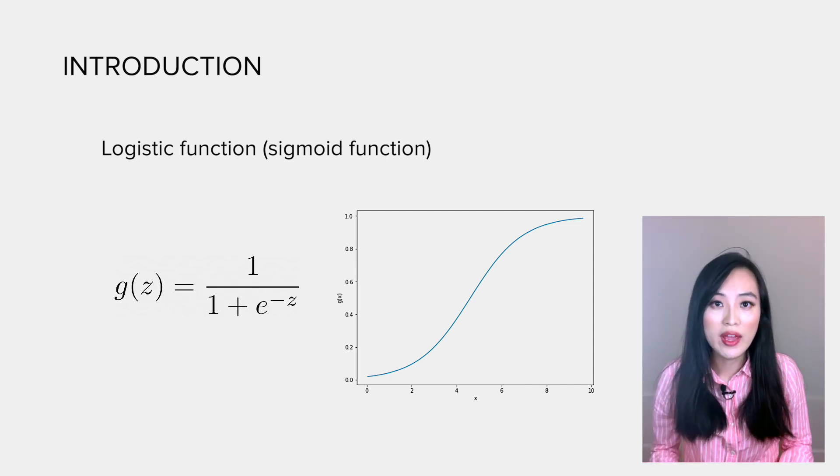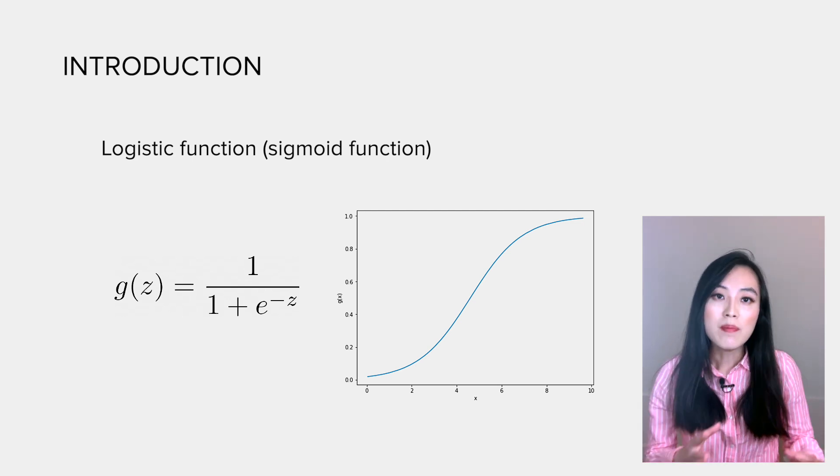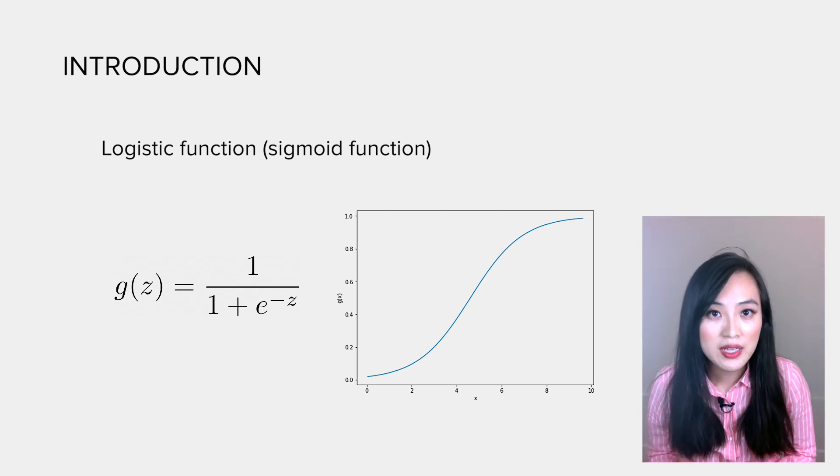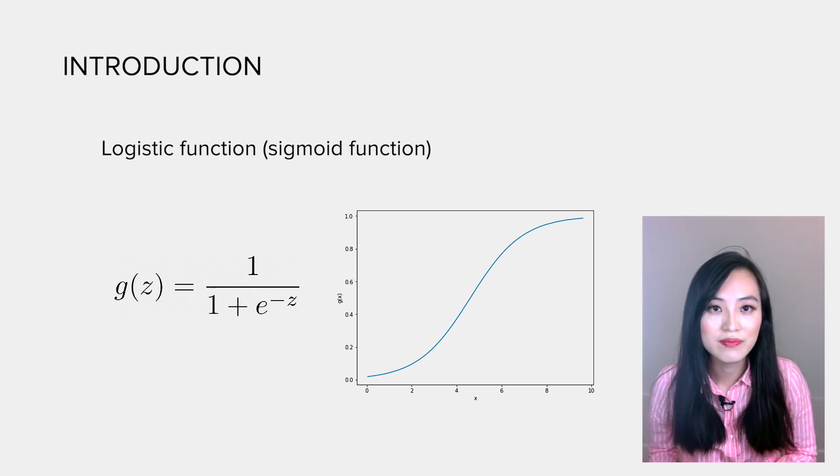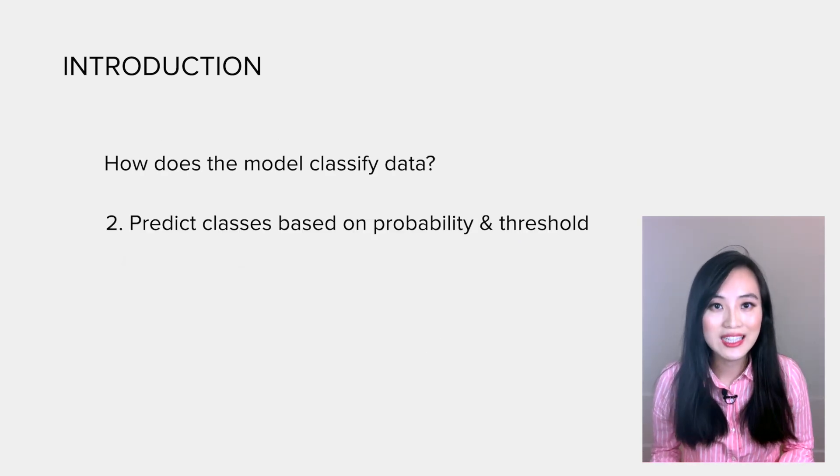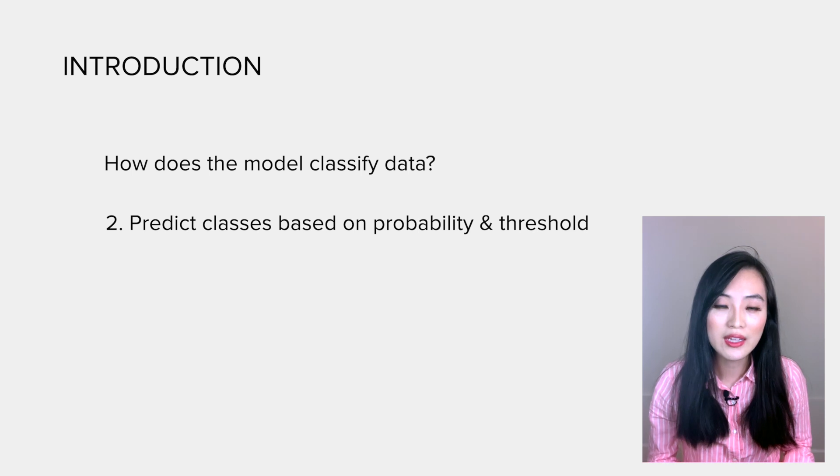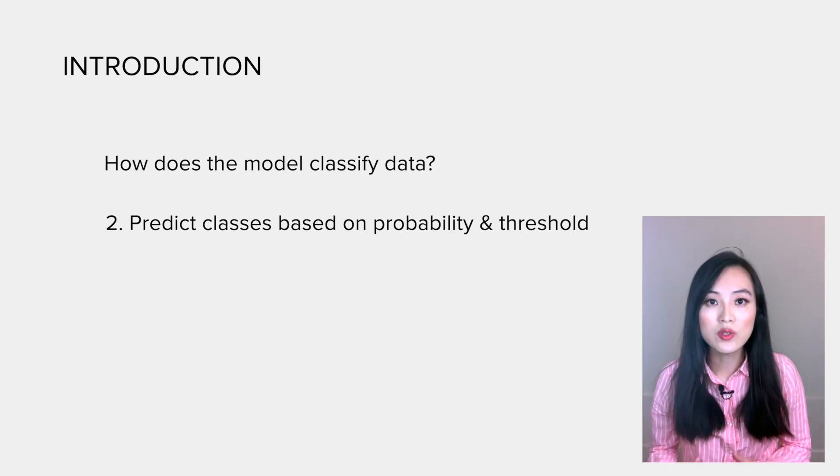Positive numbers become high probabilities and negative numbers become low ones. The second step is to predict the class based on the probability we get in the previous step and the threshold we set.